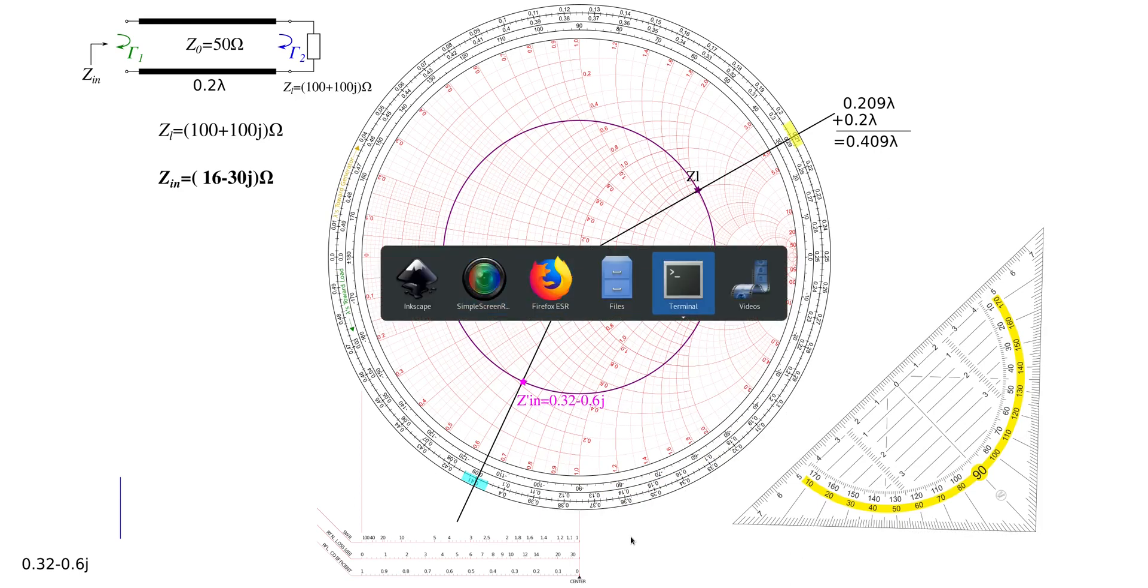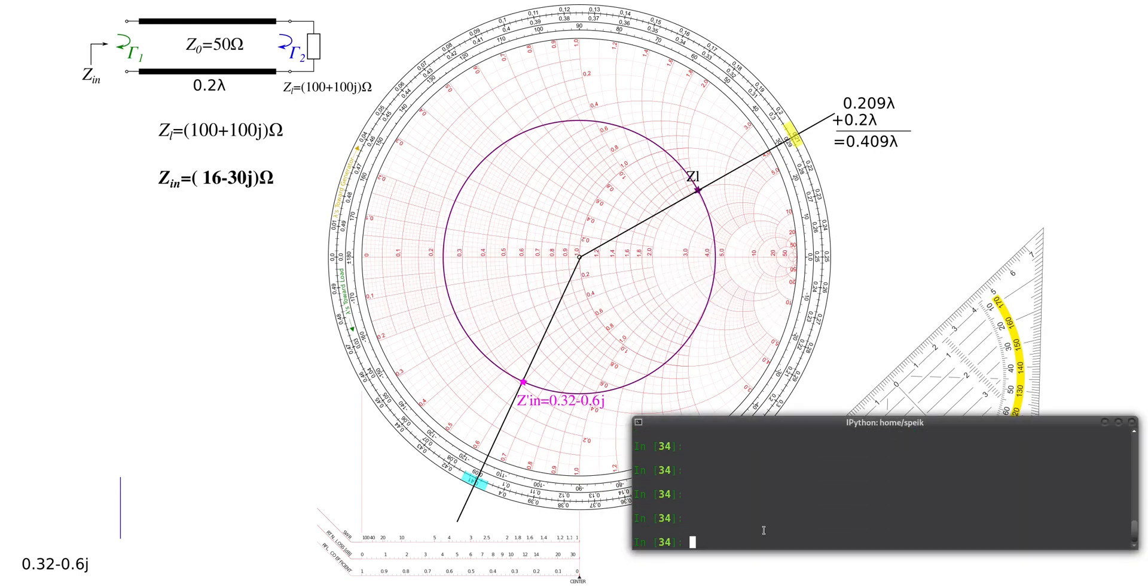Let's double check that. Again, I prepared that here. What we have to do is we have to find now a couple of values. First, we need Z_0 in Python. That Z_0 is 50 ohms. Then we need our load impedance, which I also prepared here already, which is 100 plus 100j. Then we need the length of the line, the electrical length of the line in radians.